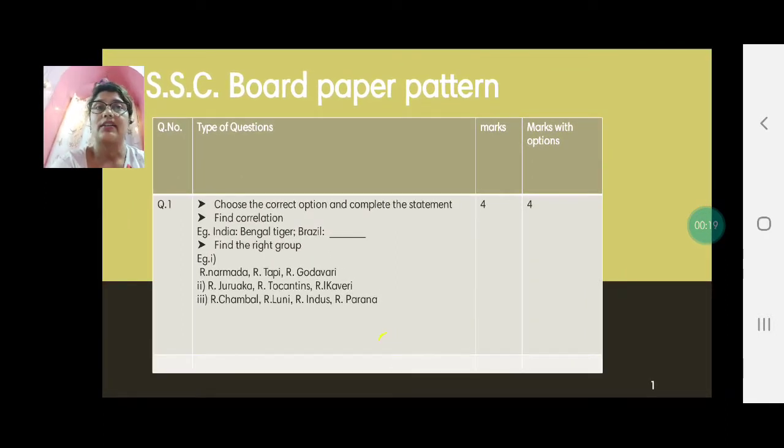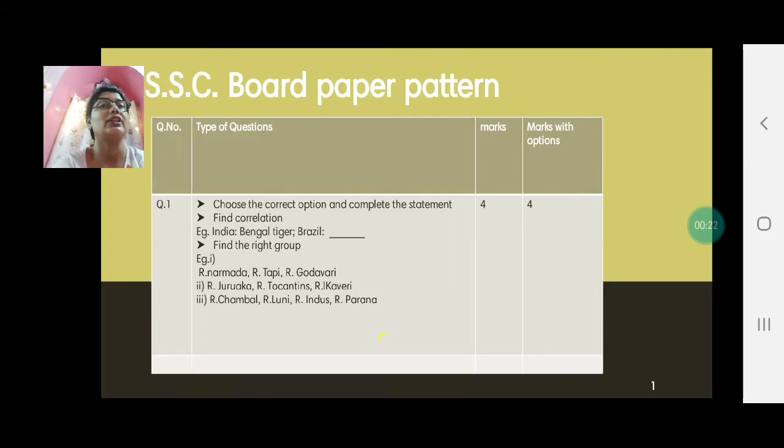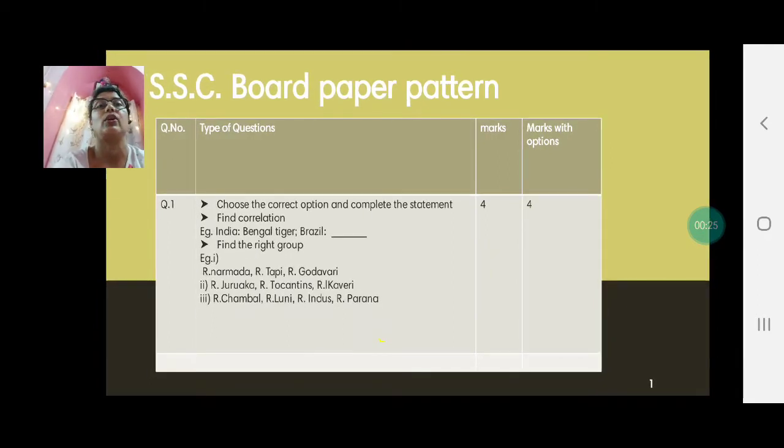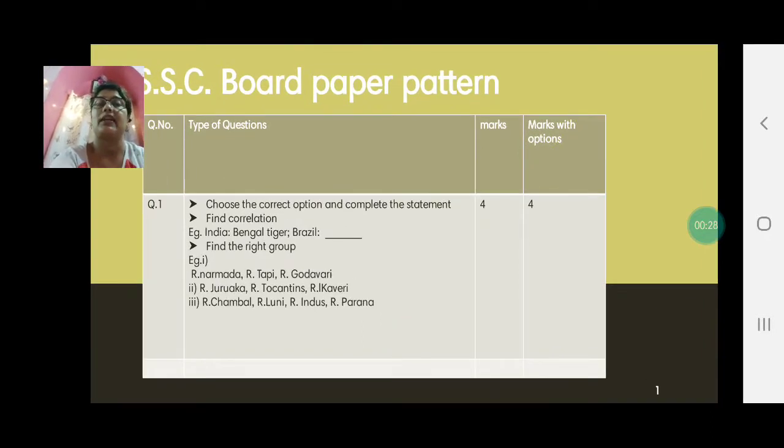There can be a variety of types of questions that can be asked. Then I have put the total marks without option, there is compulsory marks and with options also I have put another column with marks. The first question, there can be a variety of questions but the most common one is choose the correct option and complete the statement. Now remember you cannot just write the answers. You have to write the complete statement, put your answer into the statement and draw a box.